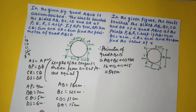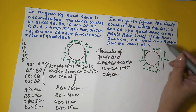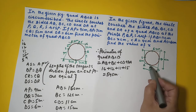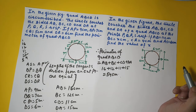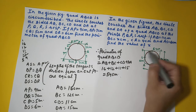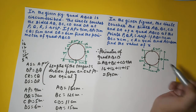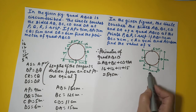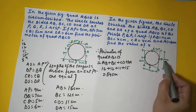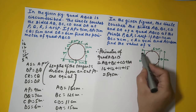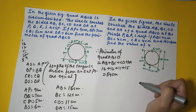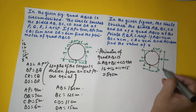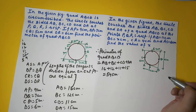Let us move to another problem. In this figure, the circle touches the sides AB at P, BC at Q, CD at R, and DA at S. We are told that AB is 11 centimeters, BC is X centimeters, CR is 4 centimeters, and AS is 6 centimeters. We want to calculate the length of BC, which is X.